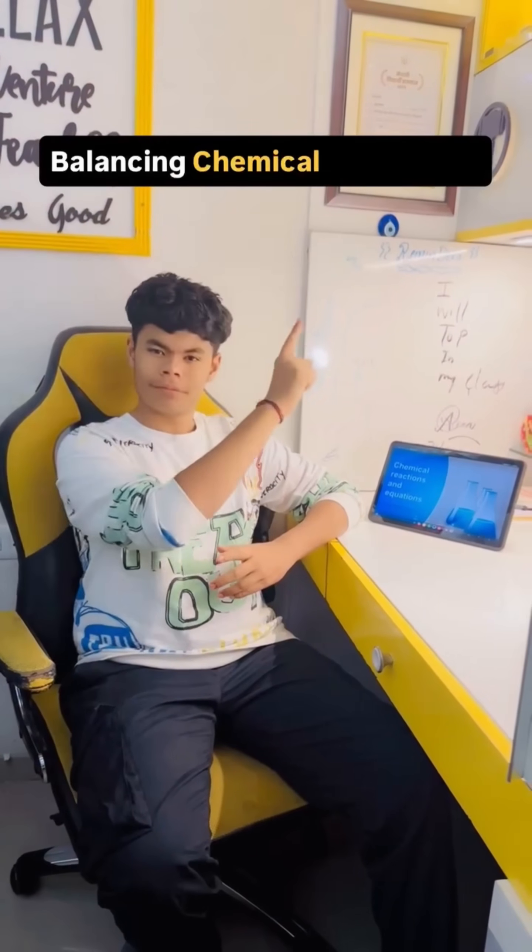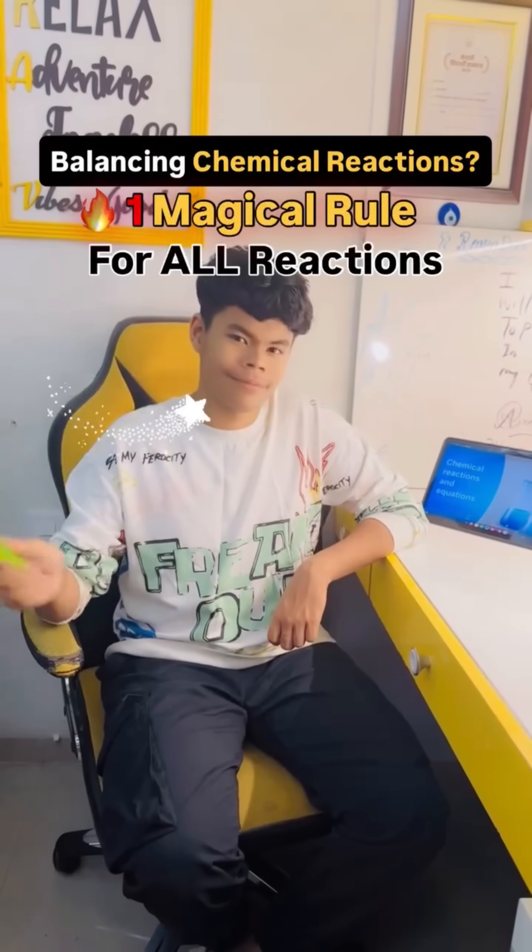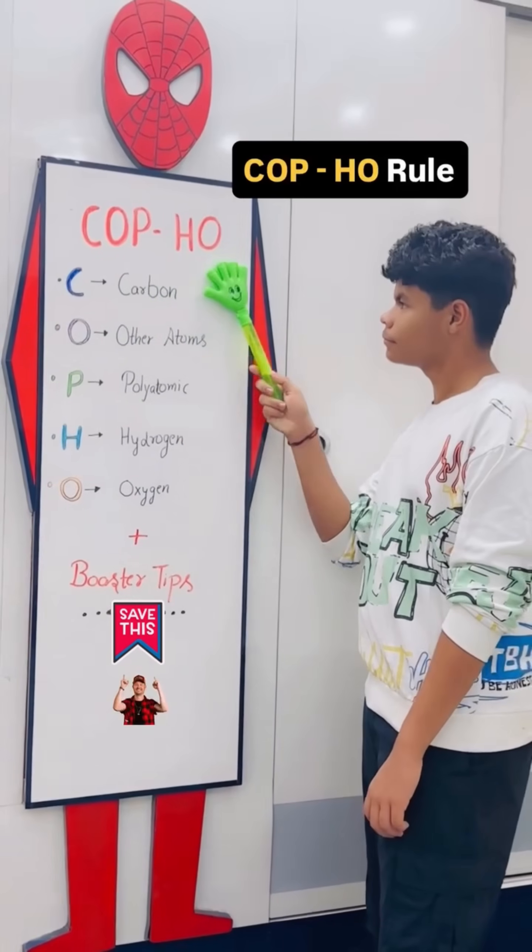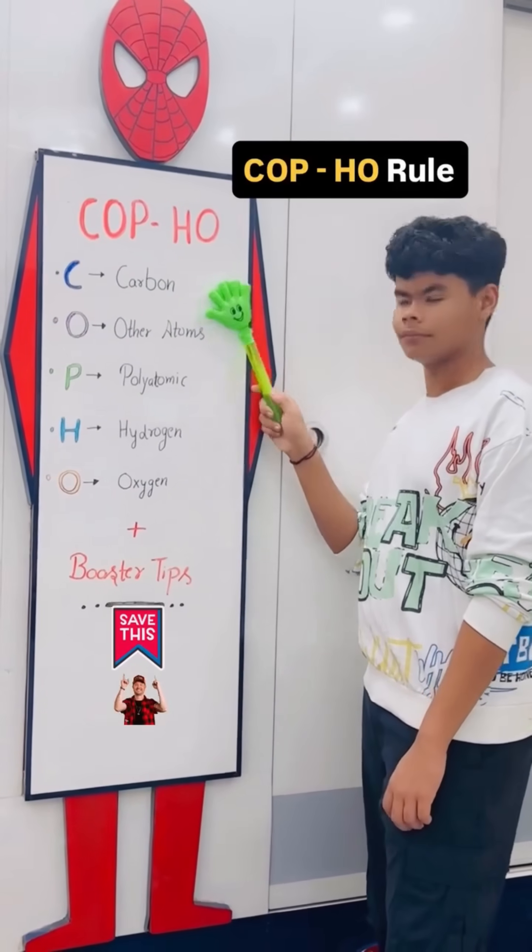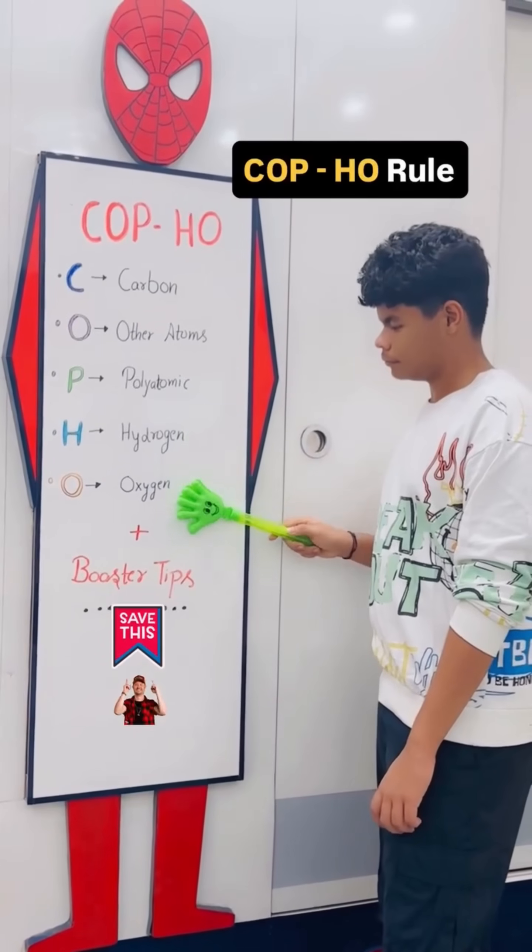Balancing chemical equations, a nightmare? Not anymore. Today I will teach you one magical rule that fits all reactions: the COP-HO rule. C for carbon, O for other elements, P for polyatomic, H for hydrogen, and O for oxygen.